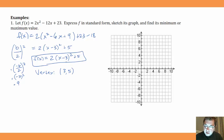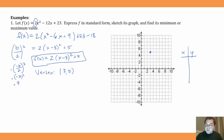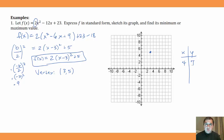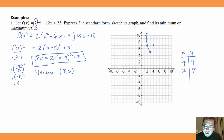Let's graph that. We put the vertex at (3, 5). We know the parabola opens up because the a value of 2 is positive. To graph more points, we plug in x = 4 — one away from the vertex: 4 - 3 = 1, 1² = 1, 1 × 2 = 2, plus 5 is 7. So when x = 4, y = 7. Because parabolas are symmetric, going one to the left of the vertex also gives y = 7, so (2, 7) is another point. With those three points we can sketch the parabola.